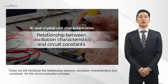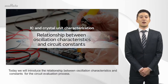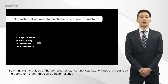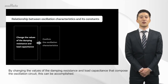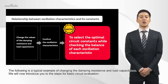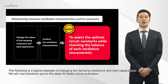Today we will introduce the relationship between oscillation characteristics and constants for the circuit evaluation process. It is necessary to select the optimal circuit constants while checking the balance of each oscillation characteristic. By changing the values of the damping resistance and load capacitance that compose the oscillation circuit, this can be accomplished. The following is a typical example of changing the damping resistance and load capacitance. We will now introduce you to the steps for basic circuit evaluation.